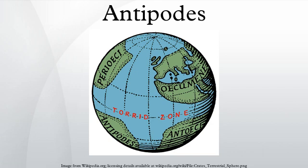The Antipodes of any place on the Earth is the place that is diametrically opposite it, so a line drawn from the one to the other passes through the centre of the Earth and forms a true diameter. For example, the Antipodes of New Zealand's Lower North Island lies in Spain. Most of the Earth's land surfaces have ocean at their Antipodes, as a consequence of most land being in the land hemisphere.